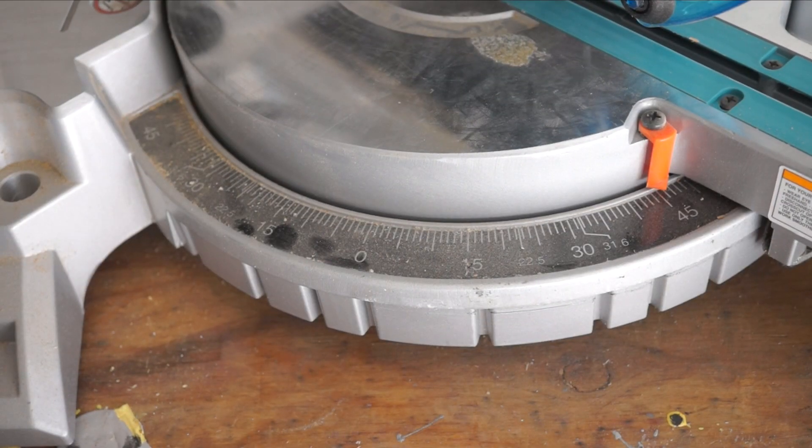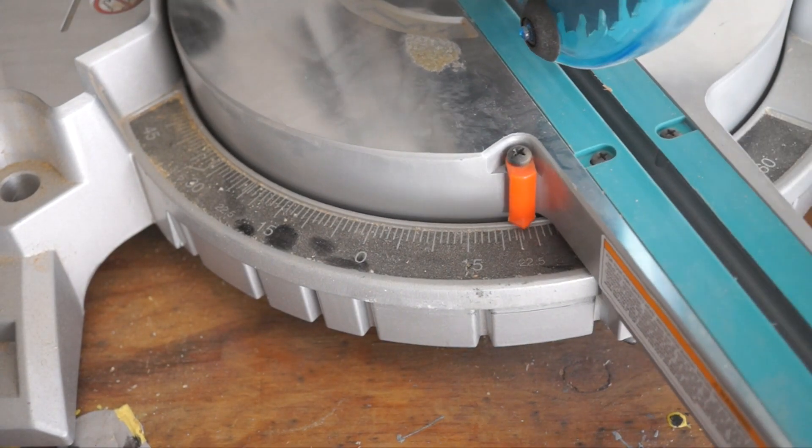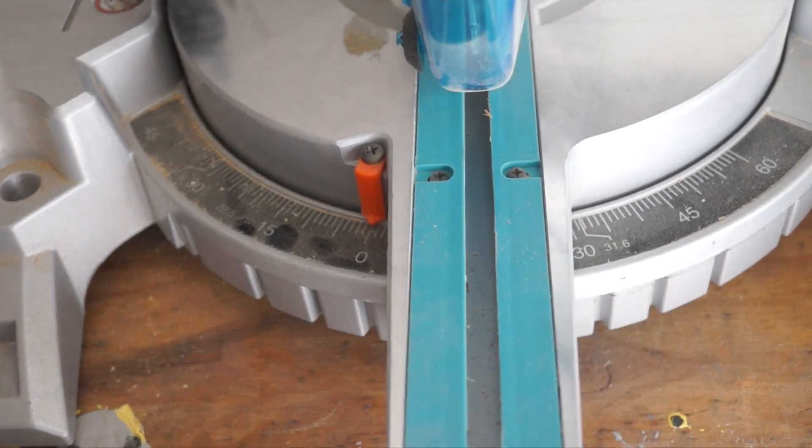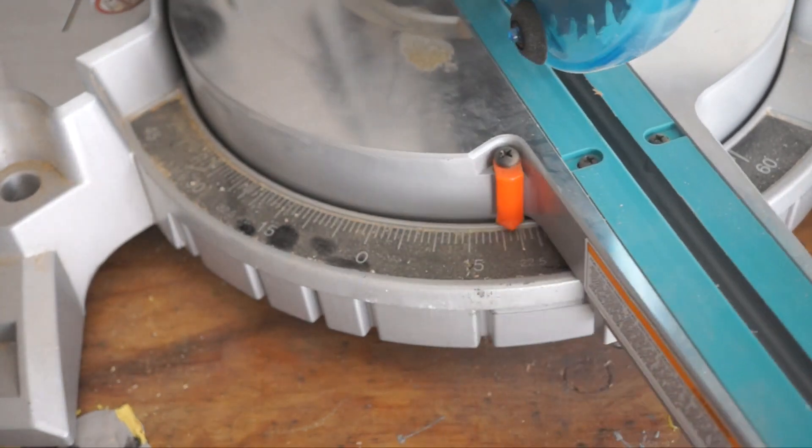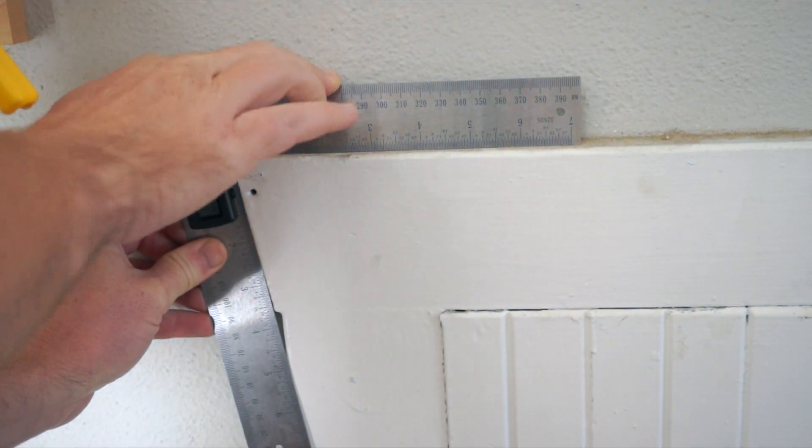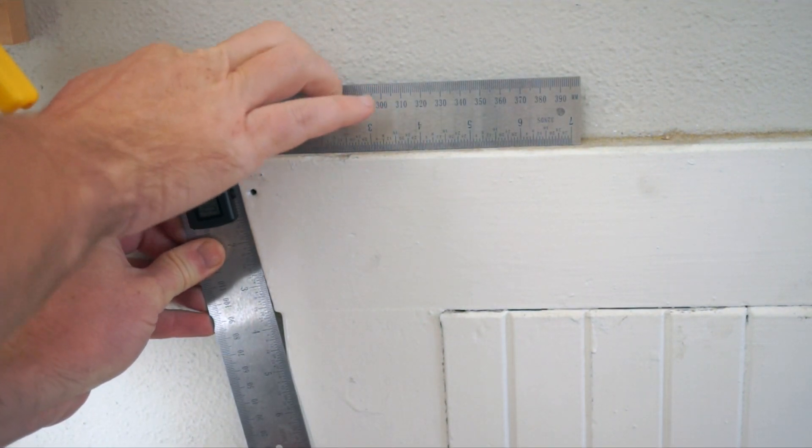Angles are tricky things. A lot of tools have useful presets for marking and cutting things at 90 or 45 degree angles, but what if you're trying to figure out the imperfect angle of something that already exists?